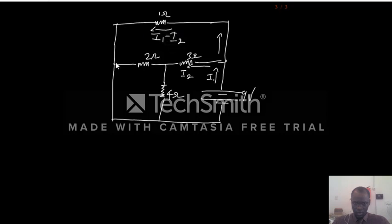So at this junction, our current will go this way, some will go this way and some will come downward. The current that goes this way is going to be I3. We have exhausted our I1 and I2, so the new current will be assigned.